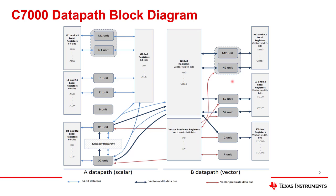There are global registers that everybody on a given side can communicate with — a set of global registers on both sides, scalar size and vector width size. But there are also local registers on both sides.